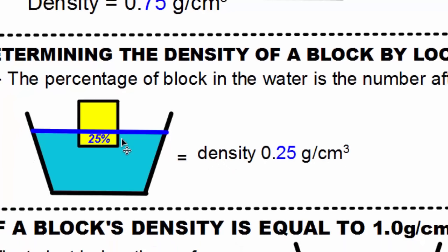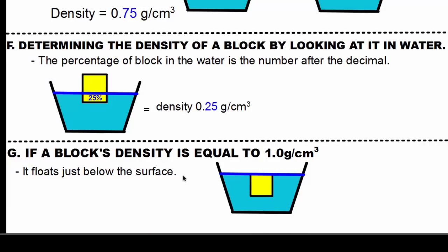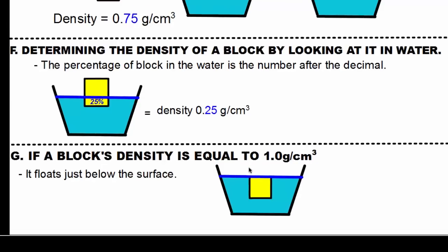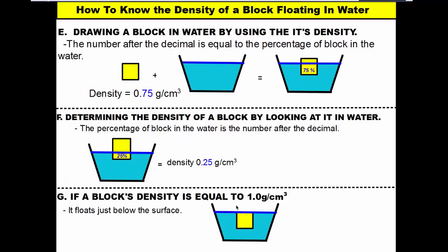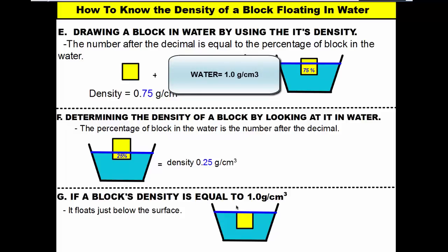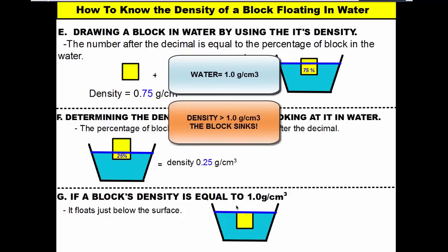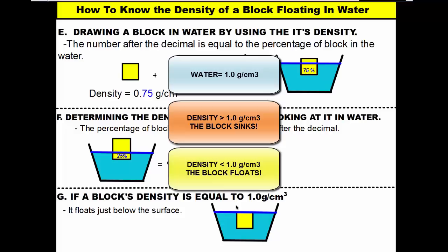Lastly, a trickier rule to help avoid drawing a block suspended in the middle: if a block's density equals exactly 1, then it floats just below the surface — 100% submerged but just at the surface. Greater than 1 it sits at the bottom of the cup; less than 1 the percentage submerged equals the density value. Always remember: water's density is 1.0 grams per cubic centimeter. Bigger than 1.0 means heavier than water and it sinks; less than 1.0 means water is heavier and the object floats.